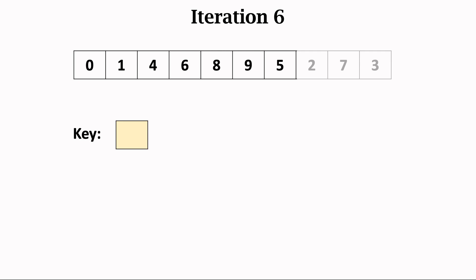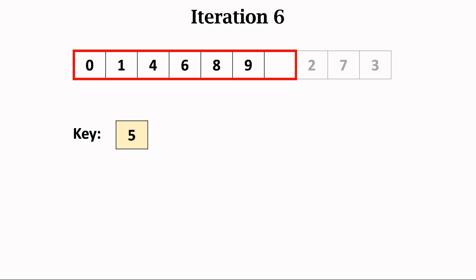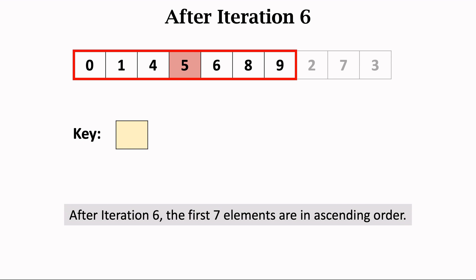Now the sixth iteration begins. We work on the first seven elements. Take the rightmost element, 5, out of the subarray and let 5 be the key. By comparing the key with the remaining elements in the subarray, we find the right position for inserting the key. Move the elements 6, 8 and 9 one step right to make a room. Insert the key into the vacant position. After the sixth iteration, all seven elements are in ascending order.